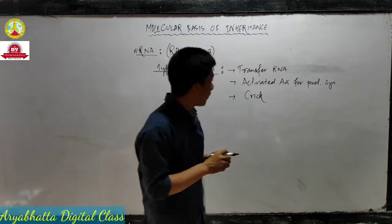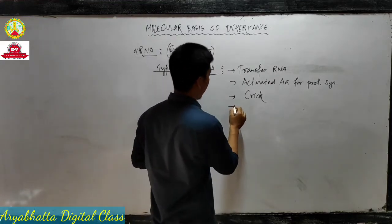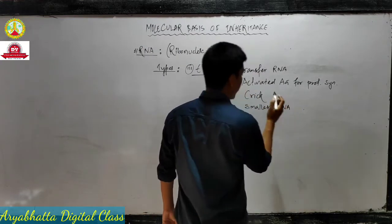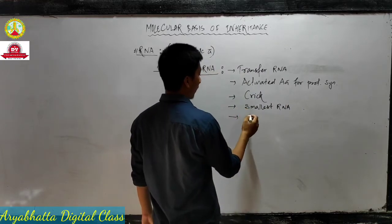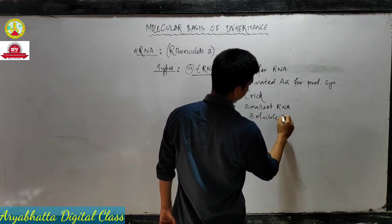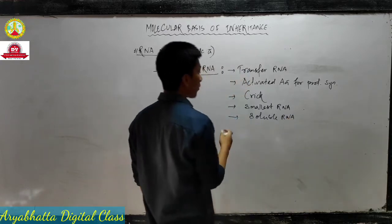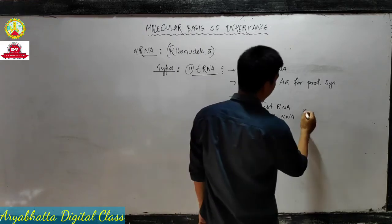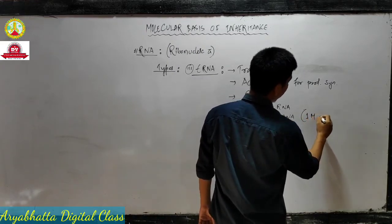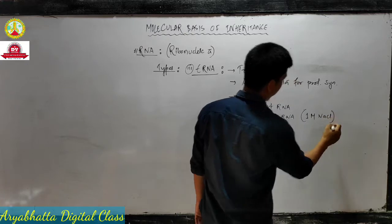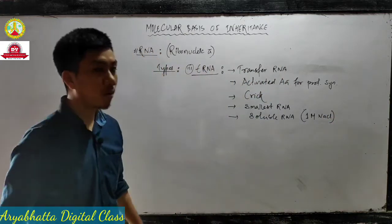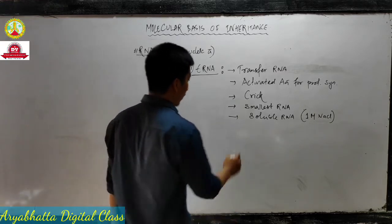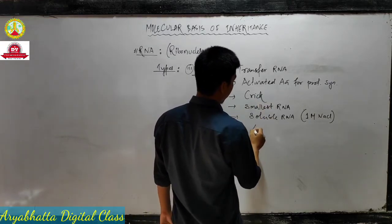tRNA are the smallest RNA. They have many names - they are also called soluble RNA because tRNA dissolves in a one molar solution of sodium chloride. That is why it is called soluble RNA.